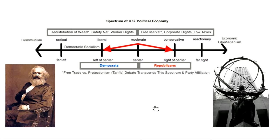I want you to focus first on the economic implications, especially at this point in the course. To be on the right economically is to favor less government interference in the economy — more of a free market with fewer regulations, lower taxes — generally favoring the rights of companies and corporations over workers or consumers. Whereas on the left, there's more of a push for government intervention on behalf of those workers and consumers, higher taxes, greater redistribution of wealth, and a safety net for retirees and disabled workers.